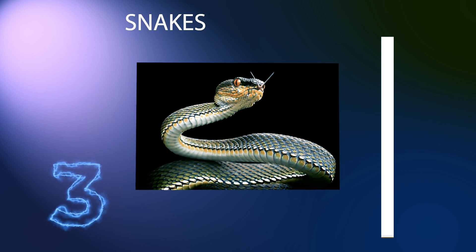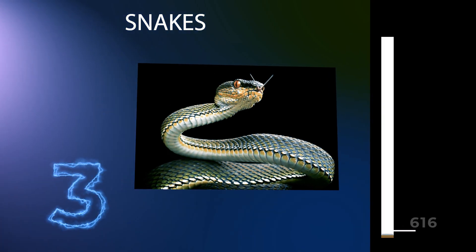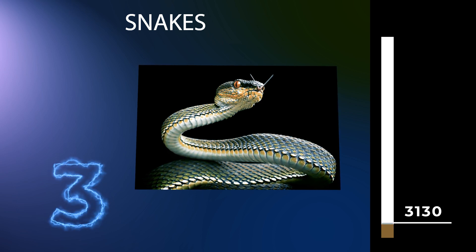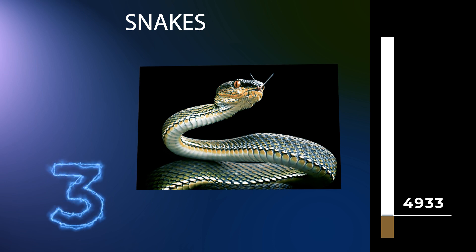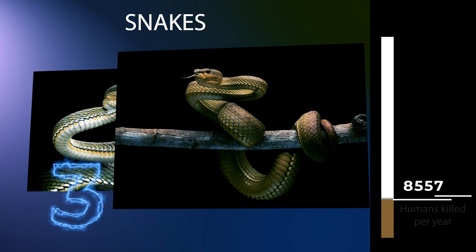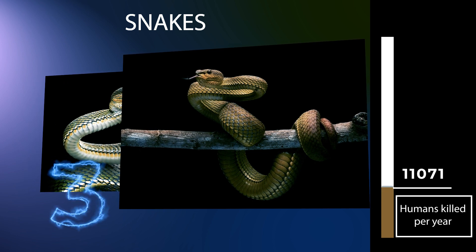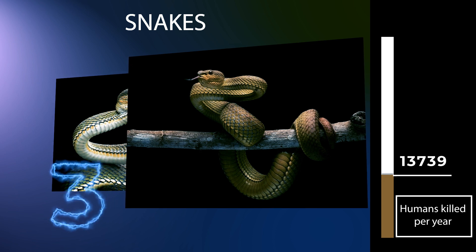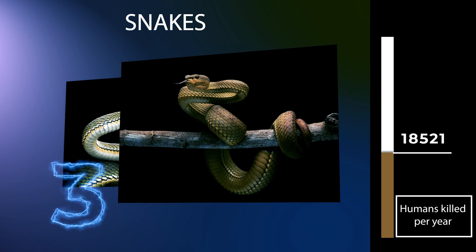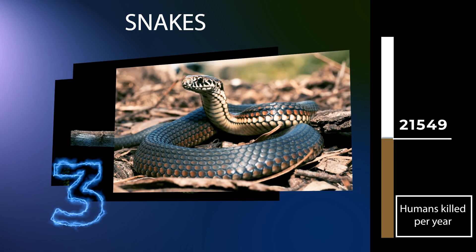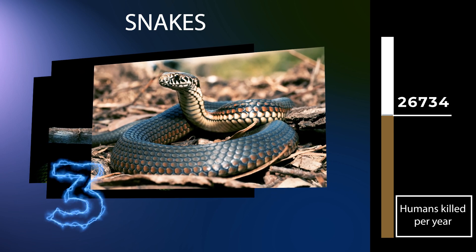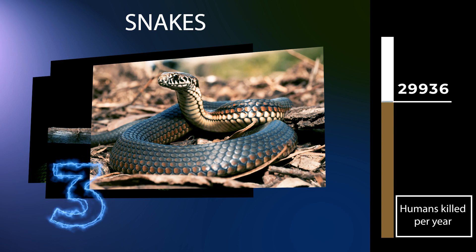Snakes are elongated, limbless, carnivorous reptiles of the suborder Serpentes. Many species of snakes have skulls with several more joints than their lizard ancestors, enabling them to swallow prey much larger than their heads — cranial kinesis. To accommodate their narrow bodies, snakes' paired organs, such as kidneys, appear one in front of the other instead of side by side, and most have only one functional lung. Snake venom is a highly toxic saliva containing zootoxins that facilitates the immobilization and digestion of prey, and also provides defense against threats. Snake venom is injected by unique fangs during a bite, whereas some species are also able to spit venom.